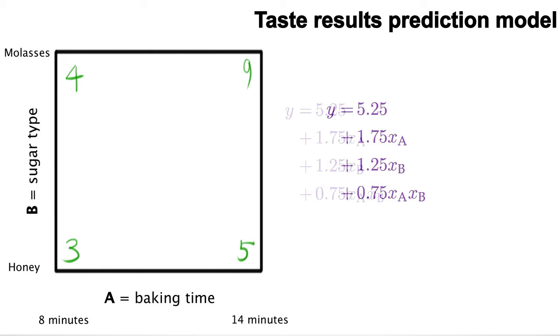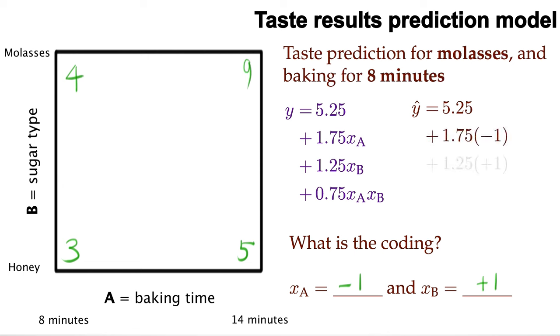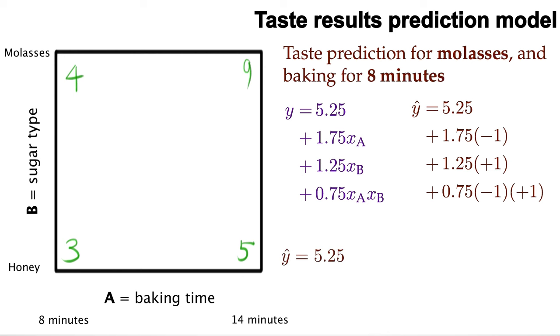So let's take a look and see how well our predictions work. Try to predict the taste when using molasses and a cooking time of 8 minutes. For that case, xA is equal to minus 1, because of 8 minutes, and xB is equal to plus 1, because we're using molasses. That's our coding. So the predicted taste is 5.25 plus 1.75 times minus 1, plus 1.25 times plus 1, plus this interaction of 0.75 times minus 1 times plus 1. This shows our baseline taste is 5.25, but using short baking times removes 1.75 from our taste score. Using molasses improves the taste by 1.25 units. And then the interaction works against us, unfortunately, and subtracts off 0.75 units. So our total prediction here is 4.